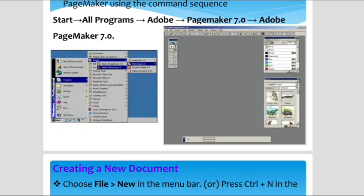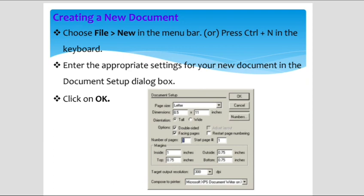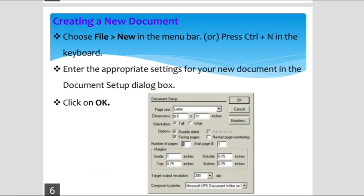Next, how to create a new document. Go to the File menu on the menu bar and click New, or use the shortcut key Ctrl+N on the keyboard. Enter the appropriate settings for your new document in the Document Setup dialog box, then click OK. The new document window will appear on the screen.